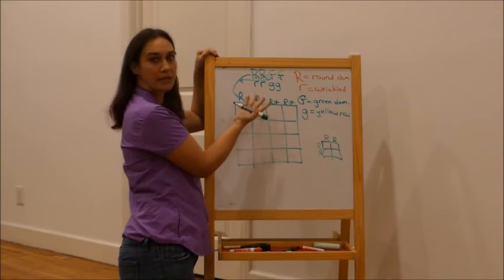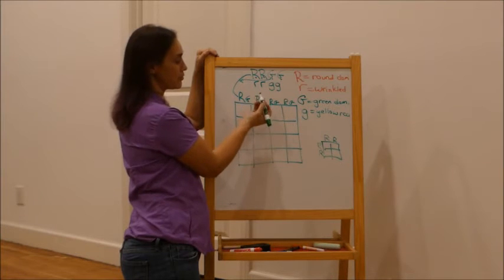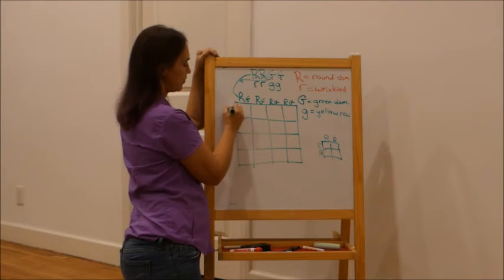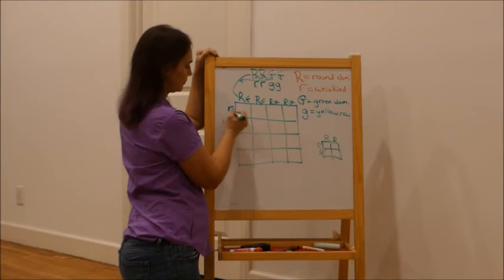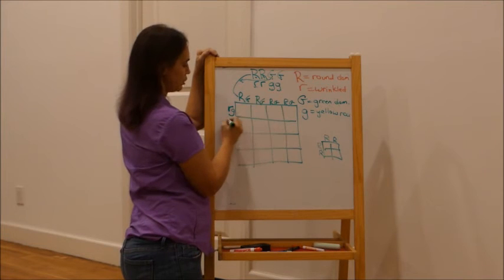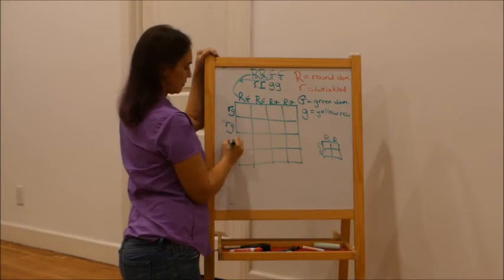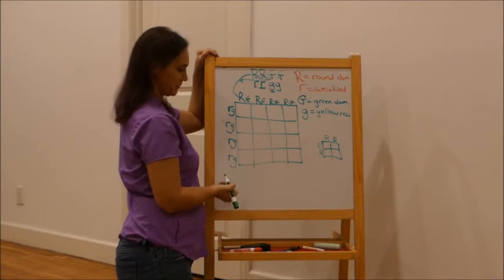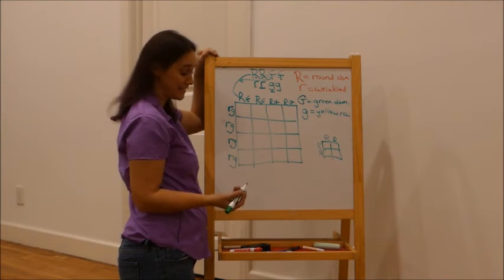That makes sense because there are only capital R's and capital G's to give. Now the recessive parent down here — the wrinkled, yellow parent — can only give lowercase r with lowercase g. So all of its combinations are lowercase r, lowercase g, which makes sense because it only has lowercase alleles to give.